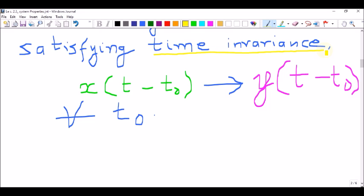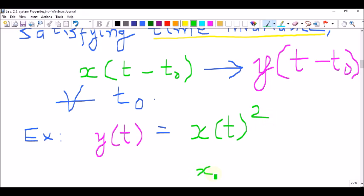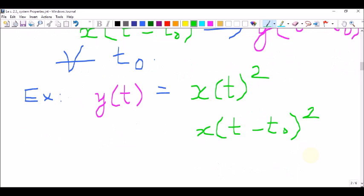Let us pick up the two examples that we saw earlier. Example number one: the system is y(t) equals the square of the input x(t). Now, let us shift the system input x(t) by an amount t0. The resulting output is the square of that shifted input.